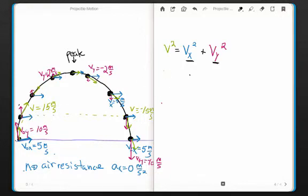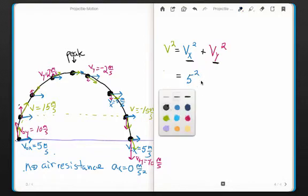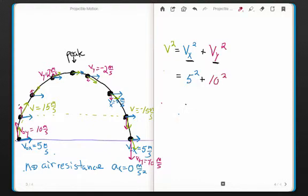So if we were to put in values, let's actually try this for the initial velocity. We have v sub 0 x as 5, 5 squared, plus the magenta one, or the v sub y is the 10 squared. It's equal to v squared.